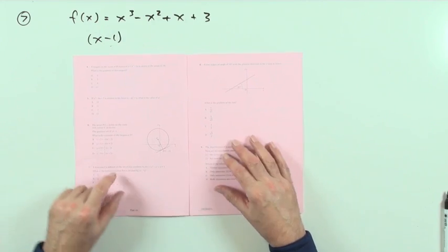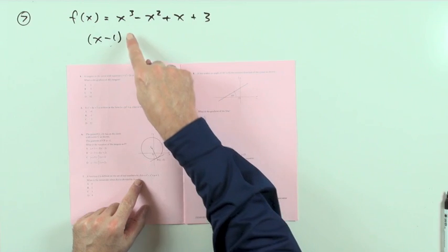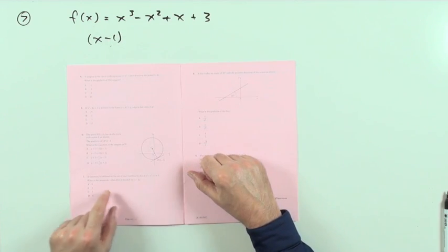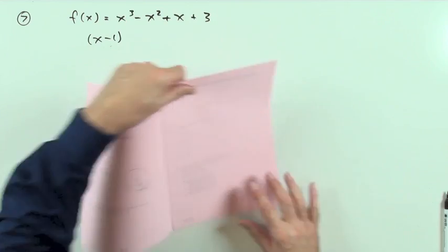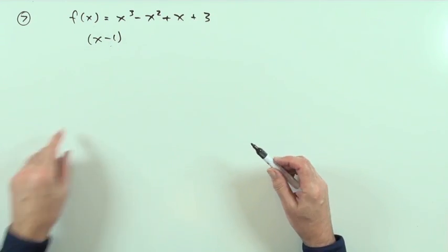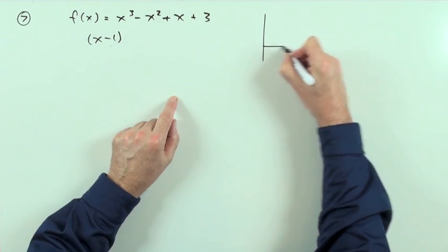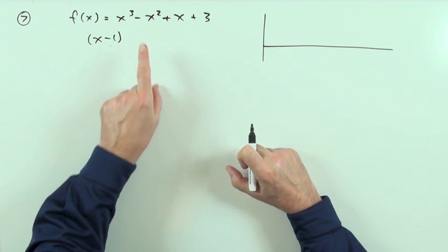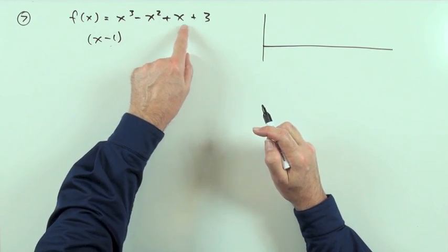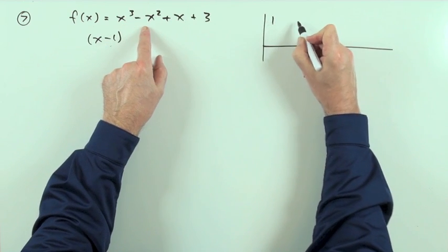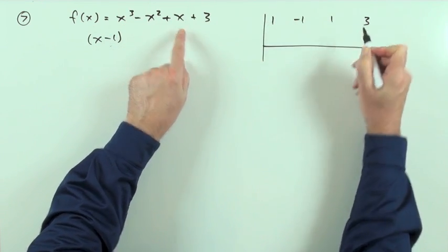Number 7. Functions defined on the set of real numbers by this formula here. What's the remainder if you were to divide by X minus 1? Well, that's just going to be synthetic division. So we'll set out that synthetic division table, being careful that there's no missing coefficients. Power 3, power 2, power 1, power 0. So the coefficients are 1, negative 1, 1, 3.